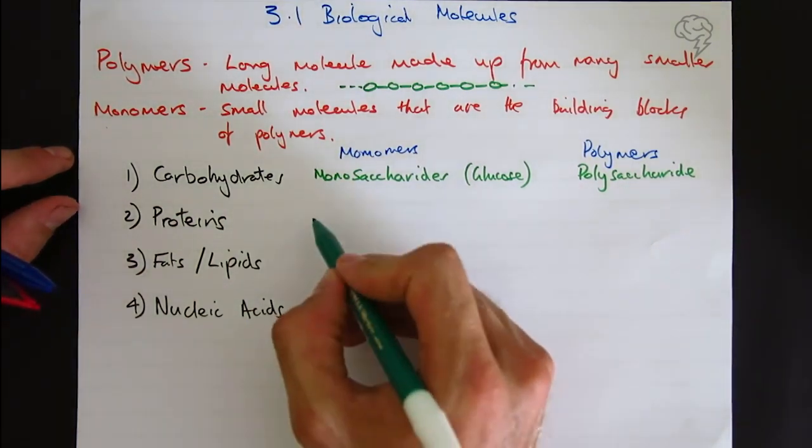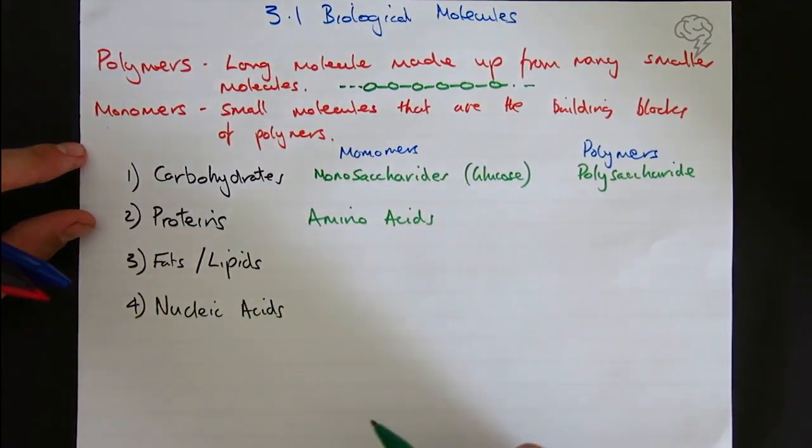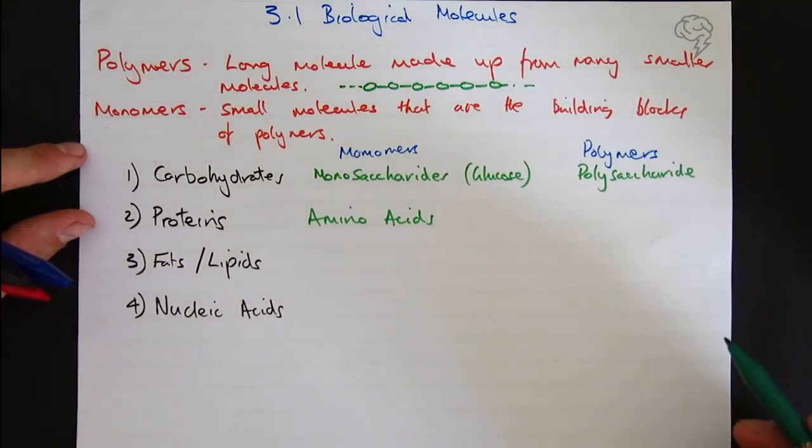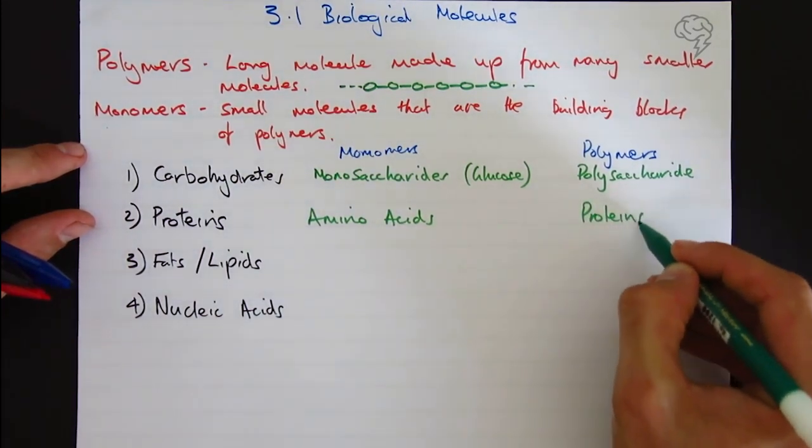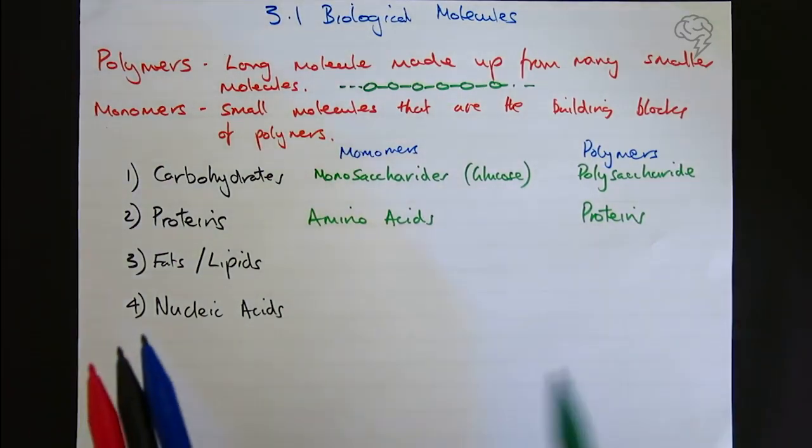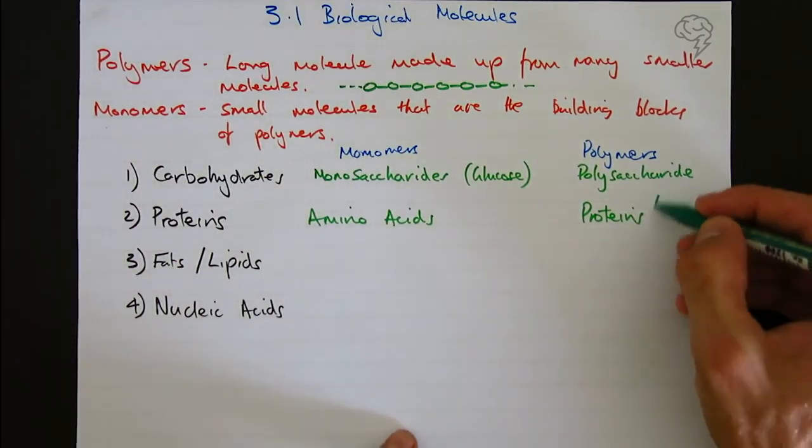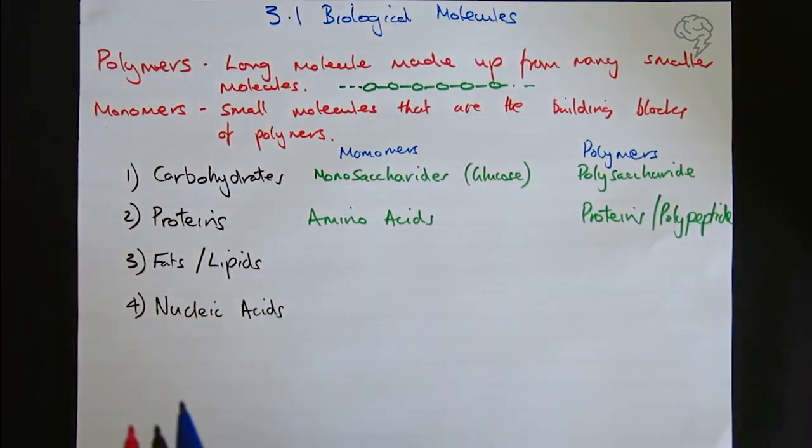The monomers of proteins are amino acids. We're going to talk a lot about those when we go into detail. You don't need to know any specific polymers. We're going to call them proteins essentially for now. We could also call them a polypeptide, which is another word for a protein.